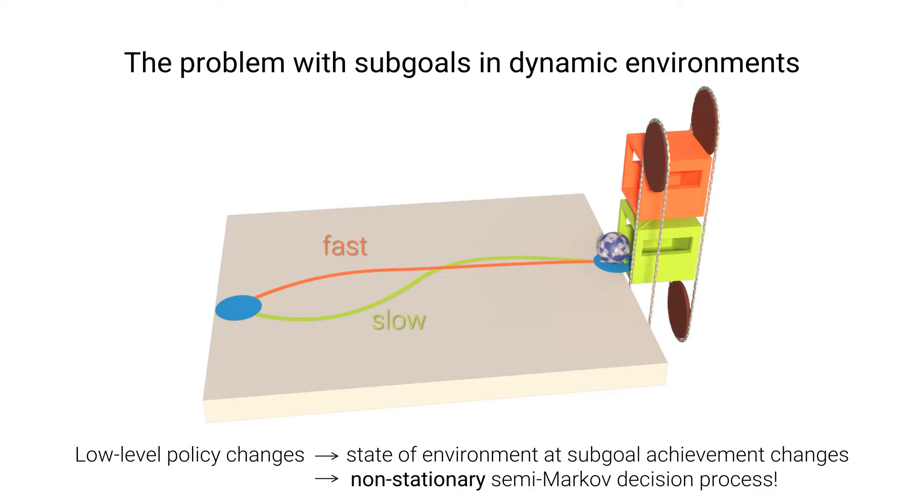Clearly, in this situation the high-level can only start to learn a stable solution once the lower-level reacts reliably to being assigned a subgoal, or, in other words, once the low-level policy has converged.